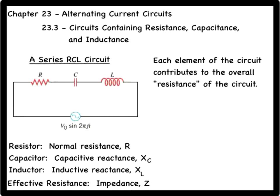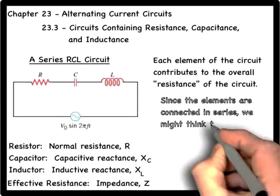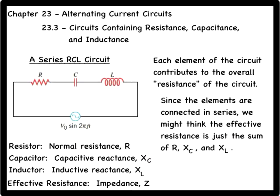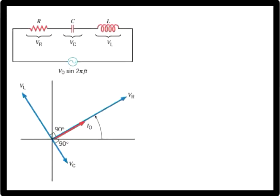Because the three elements are connected in series, it is tempting to think that the impedance would just be equal to the sum of R, XC, and XL. However, this is not correct because of the current and voltage phase relationships we studied earlier. To correctly analyze the impedance, we have to use the phasor models.